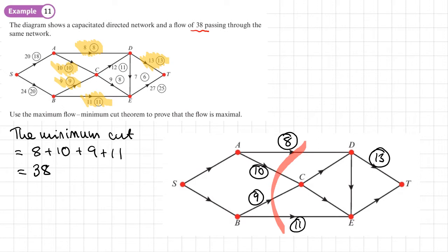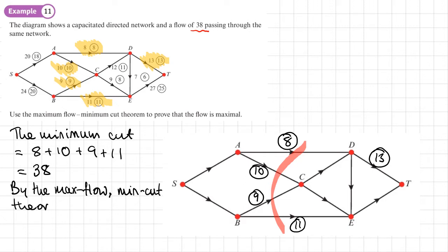In mathematics, whenever we apply a theorem we must state it explicitly. So we write: by the maximum flow minimum cut theorem, 38 is the maximum flow.